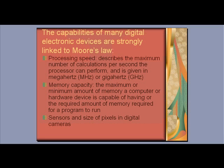The capabilities of many digital electronic devices are strongly linked to Moore's Law. These include processing speed, which describes the maximum number of calculations per second the processor can perform and is given in megahertz or gigahertz; memory capacity, the maximum or minimum amount of memory a computer or hardware device is capable of having or the required amount of memory for a program to run; and also sensors and size of pixels in digital cameras.